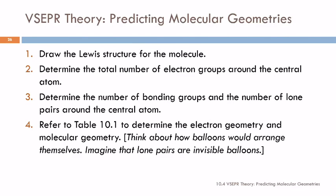So, for those of you that like instructions, lists of do this, here it is. To predict molecular geometries, draw the Lewis structure. Determine the total number of electron groups. Determine the number of bonding groups and the number of lone pairs. And this is where I think the book's instructions are pretty dumb. Refer to table 10.1.